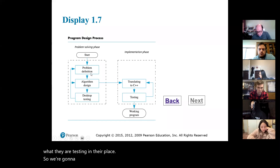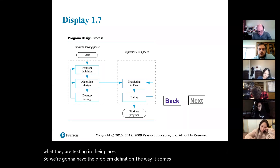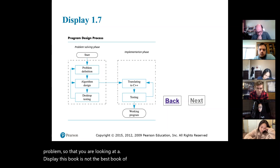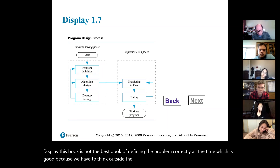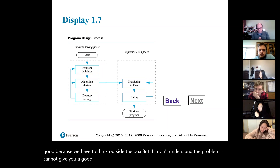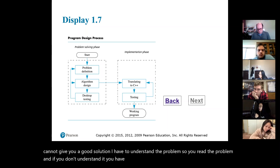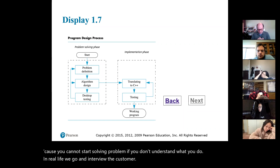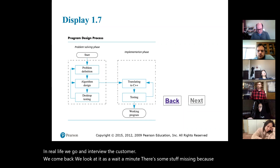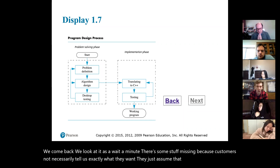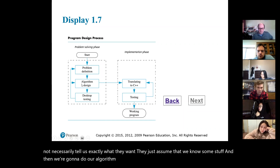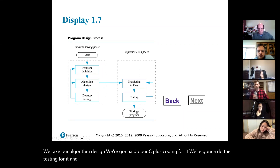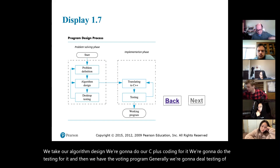We're going to have the problem definition. In this class it comes in as your assigned problem. This book is not always the best at defining the problem correctly, which is good because we have to think outside the box. If I don't understand the problem, I cannot give a good solution, so you read the problem and if you don't understand it, you ask questions. In real life we go interview the customer, come back, and realize some things are missing — customers don't necessarily tell us exactly what they want. Then we do our algorithm design, C++ coding, testing, and then we have a working program. Generally we do final testing with the customer to confirm it's what they want.